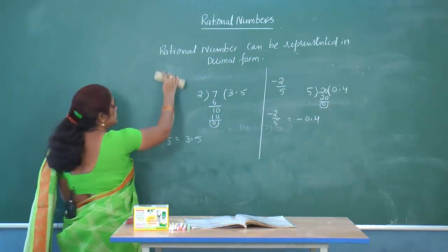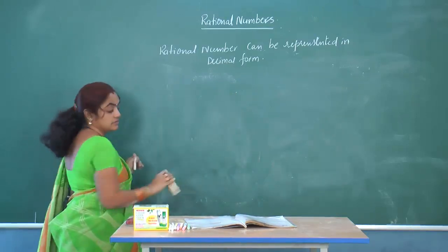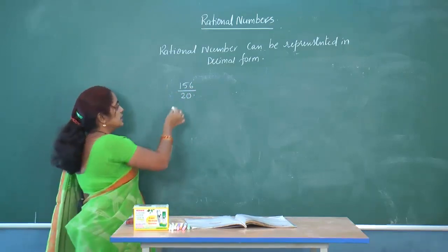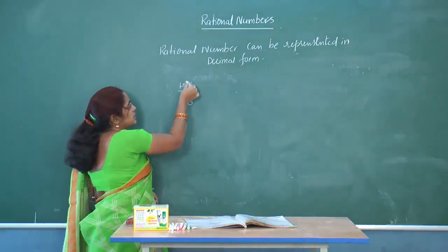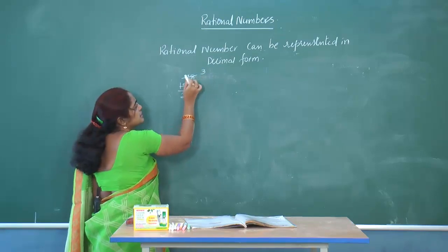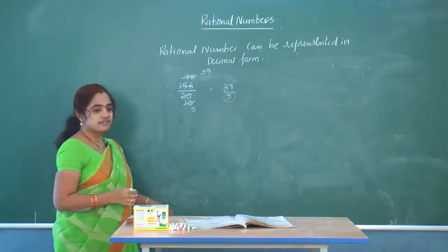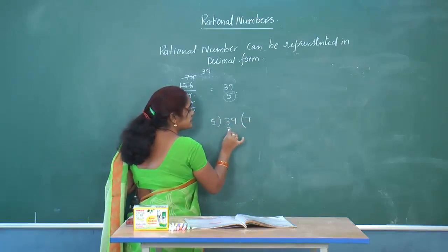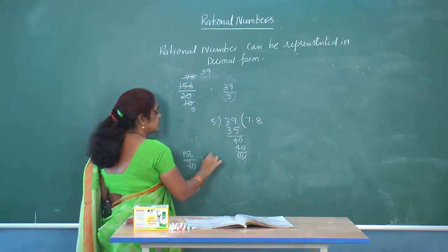For 156/20: first check if it's in simplest form. Both numbers are even, so divide by 2 repeatedly: 156/20 = 78/10 = 39/5. The denominator is 5, whose prime factor is only 5, so it is a terminating decimal. Dividing: 5 sevens are 35, remainder 4; 5 eights are 40, remainder 0. So 156/20 = 7.8.